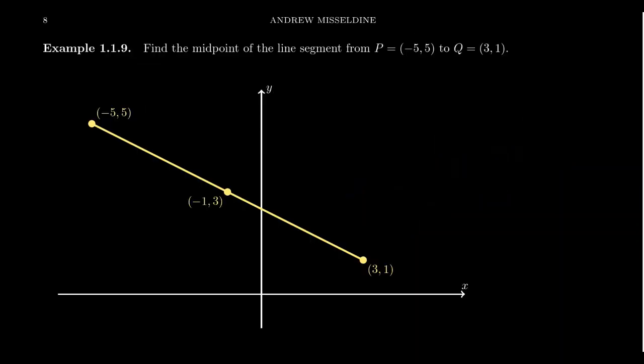So, imagine we have the following picture. Let's have the point, let's take the point P to be negative 5 comma 5. Let's take the point Q to be 3 comma 1, and let's find the midpoint between the two. You can see it's already labeled here on the screen, but how does one find out that coordinate algebraically?